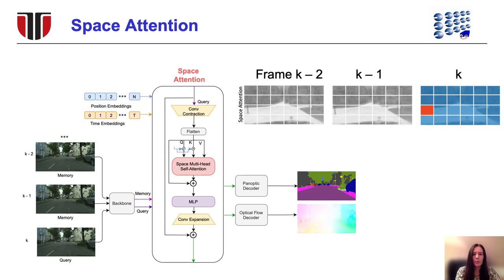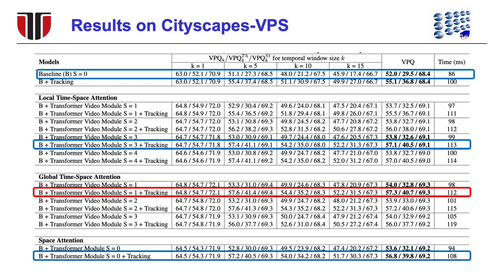We also experiment with the space attention variant. In this configuration, the panoptic network only processes the query frame. We train and evaluate our network with a ResNet-50 backbone on the Cityscapes VPS dataset. We perform a comparison between the three proposed transformer modules. The global time-space attention variant yields the best scores among all variants and increases VPQ by 2, and after tracking by 2.2, compared to the baseline.